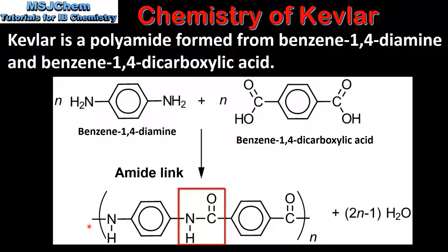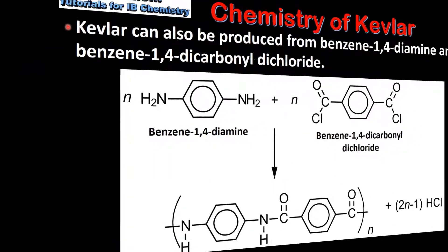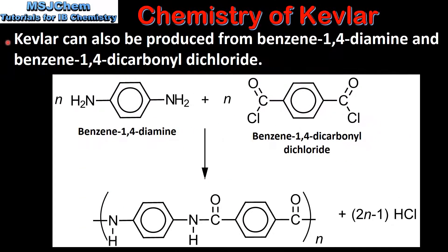Here we can see one repeating unit of the polymer chain. Kevlar can also be produced from benzene 1,4-diamine and benzene 1,4-dicarbonyl-dichloride.